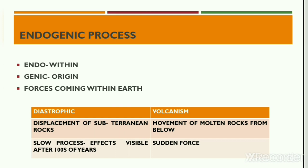Volcanism is another type of endogenic process that refers to the movement of molten rocks below the surface of the earth. These types of forces are very sudden in nature, and hence they are also termed as catastrophic processes.